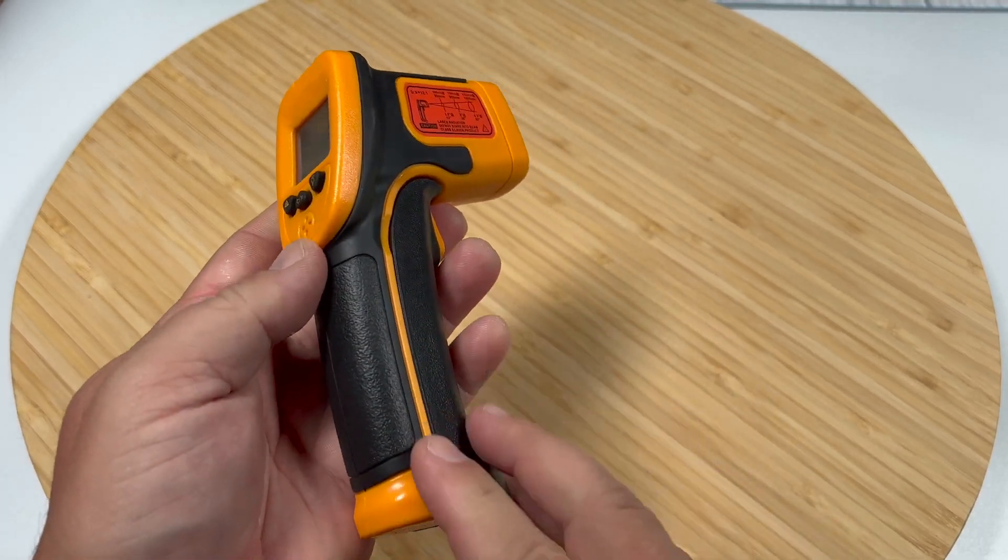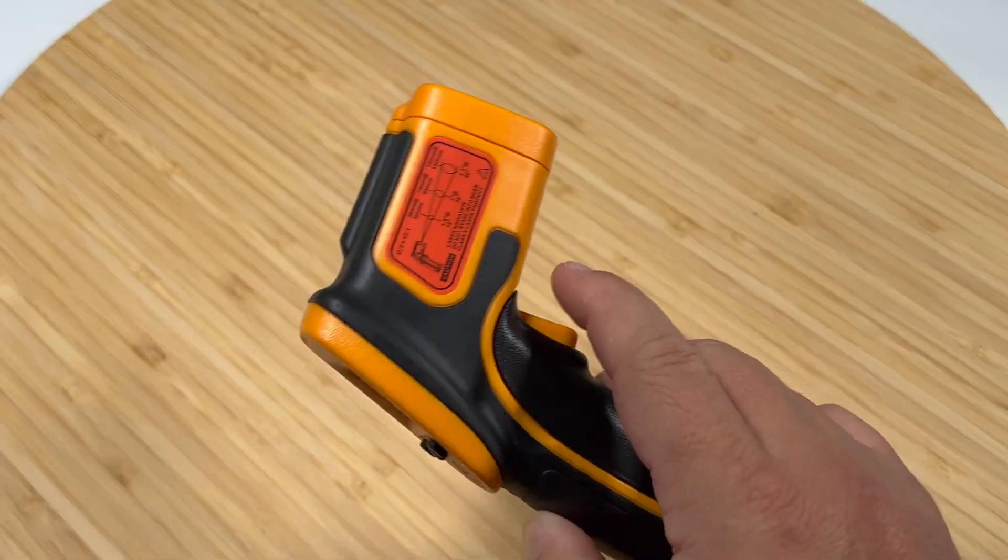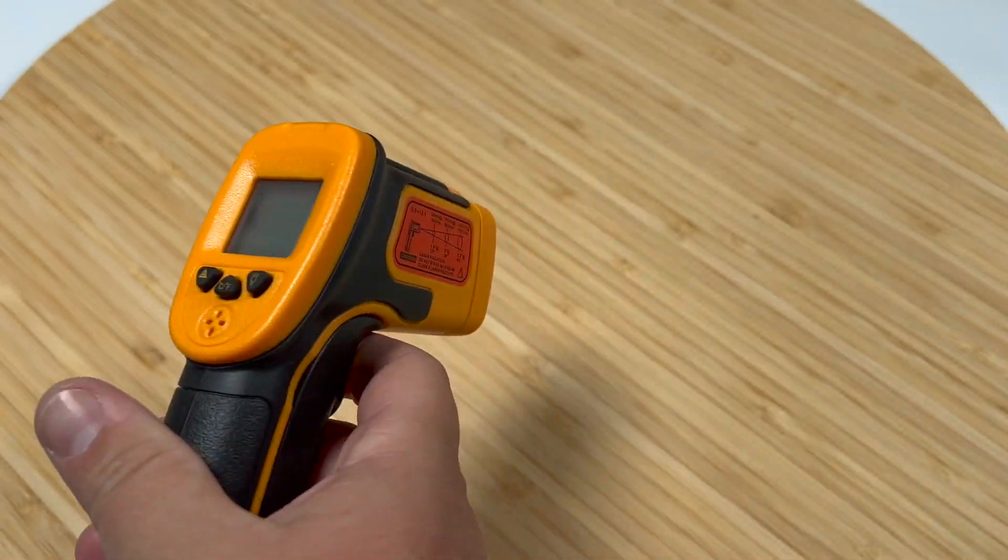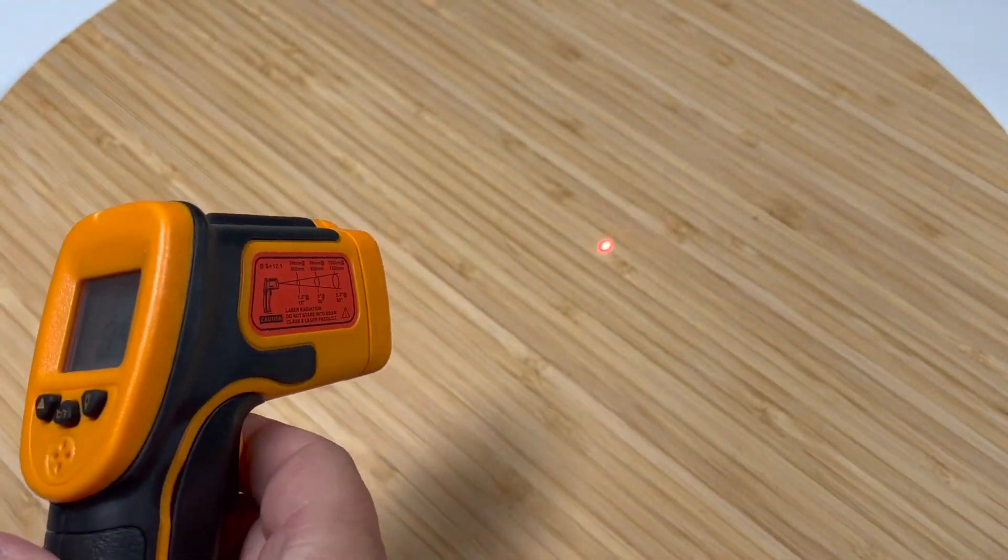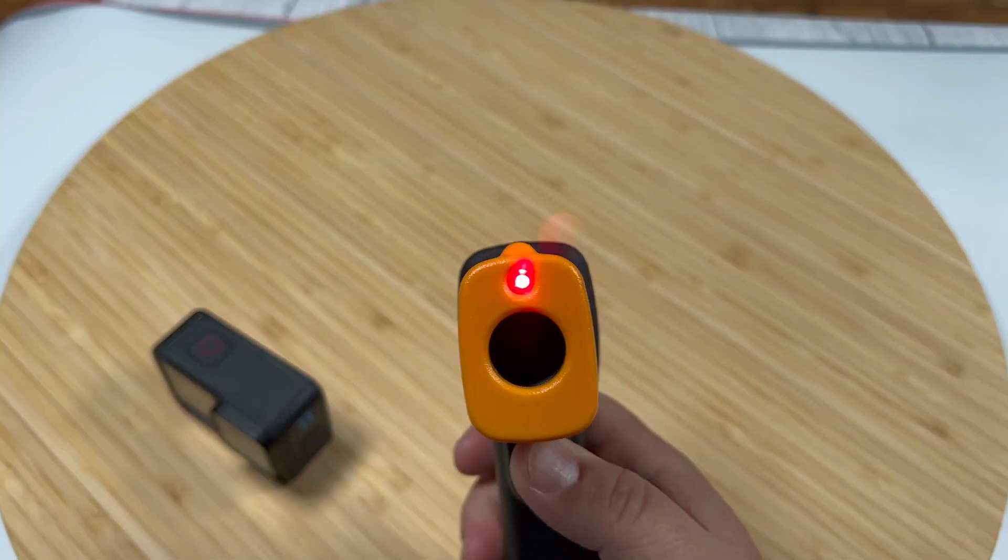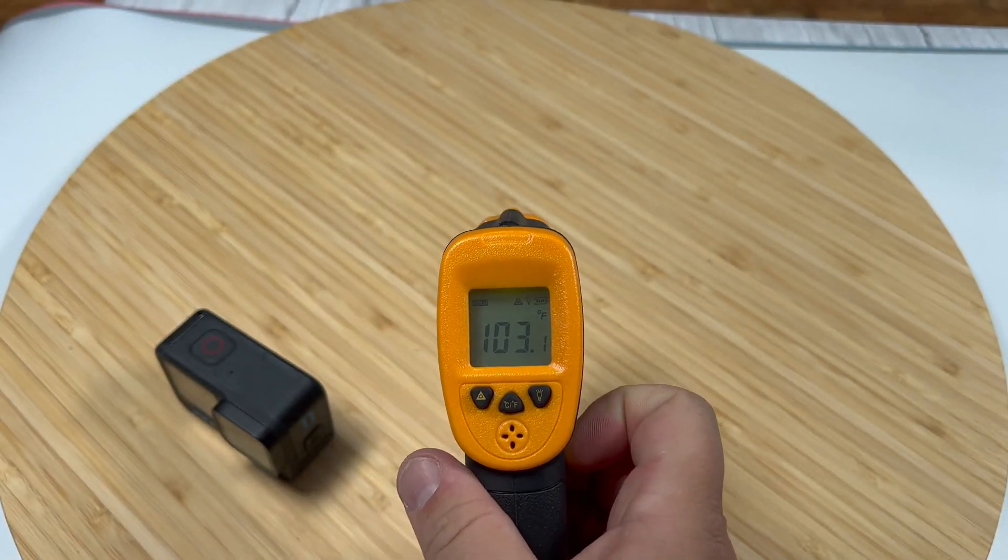If you're looking for an infrared thermometer, this is actually a really good one. It's incredibly simple - you just squeeze the trigger and you get a laser. Point the laser at what you want to measure, and when you let go it will beep and tell you the temperature.